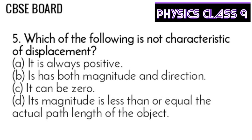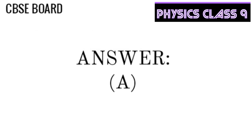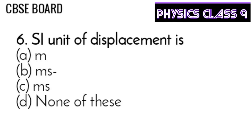Question 5: Which of the following is not a characteristic of displacement? It is always positive; it has both magnitude and direction; it can be zero; its magnitude is less than or equal to the actual path length. The answer is A — displacement is not always positive.